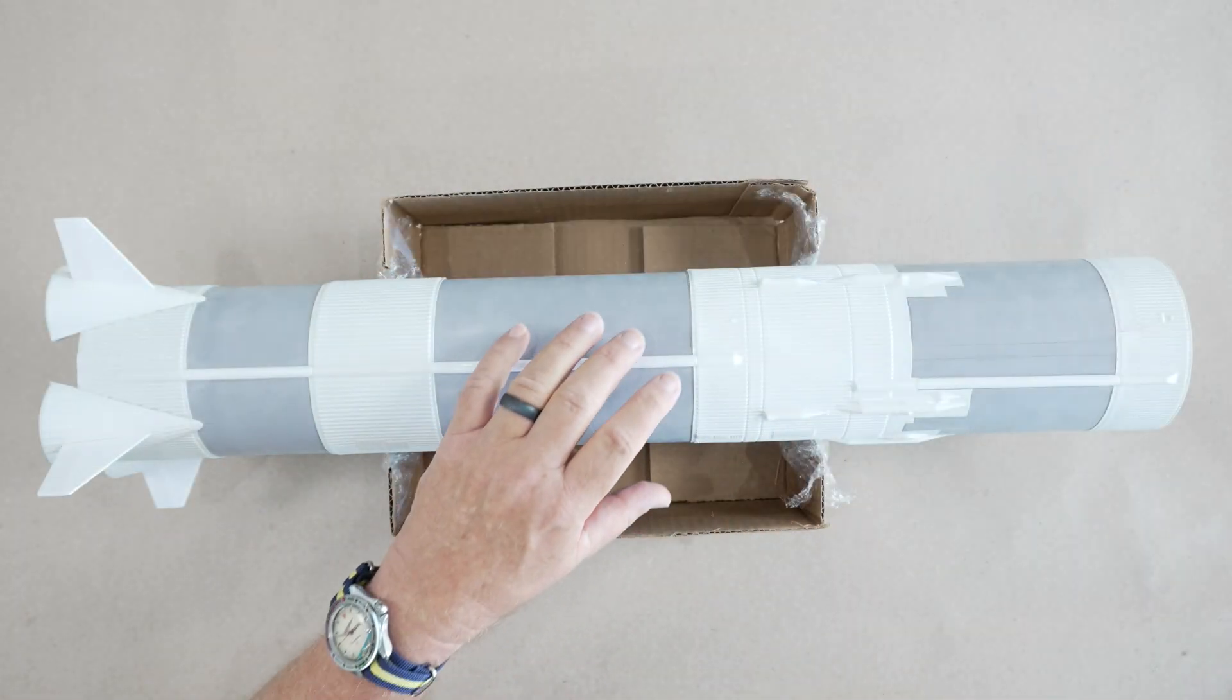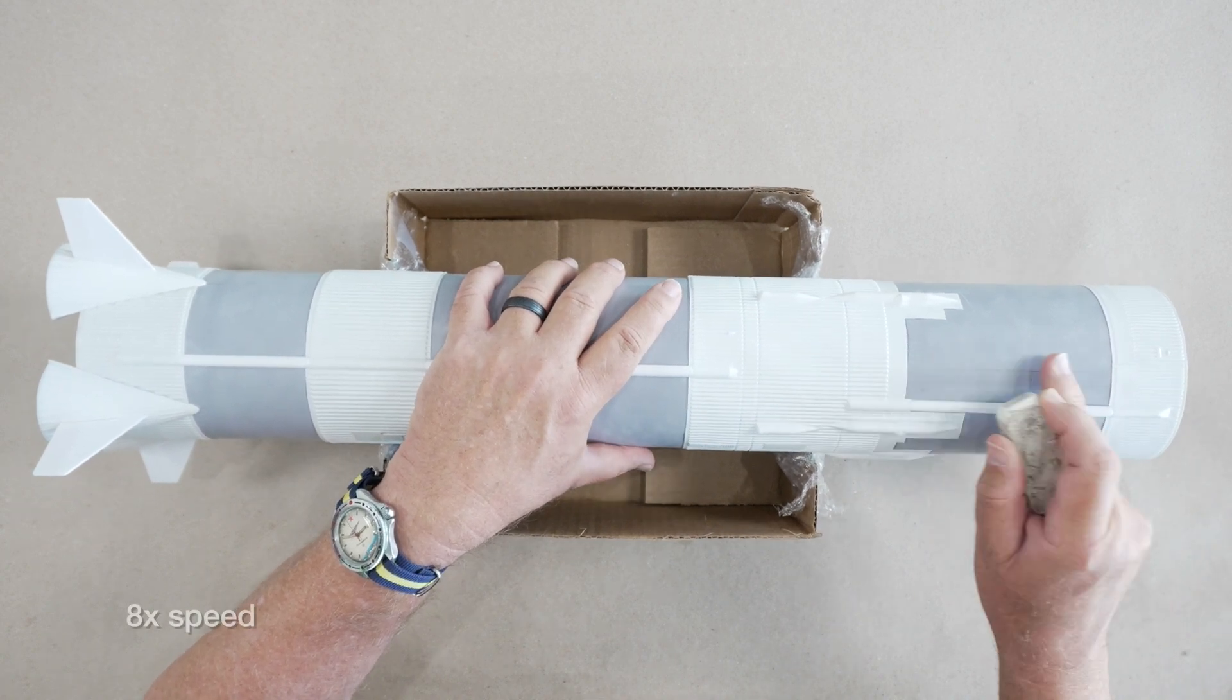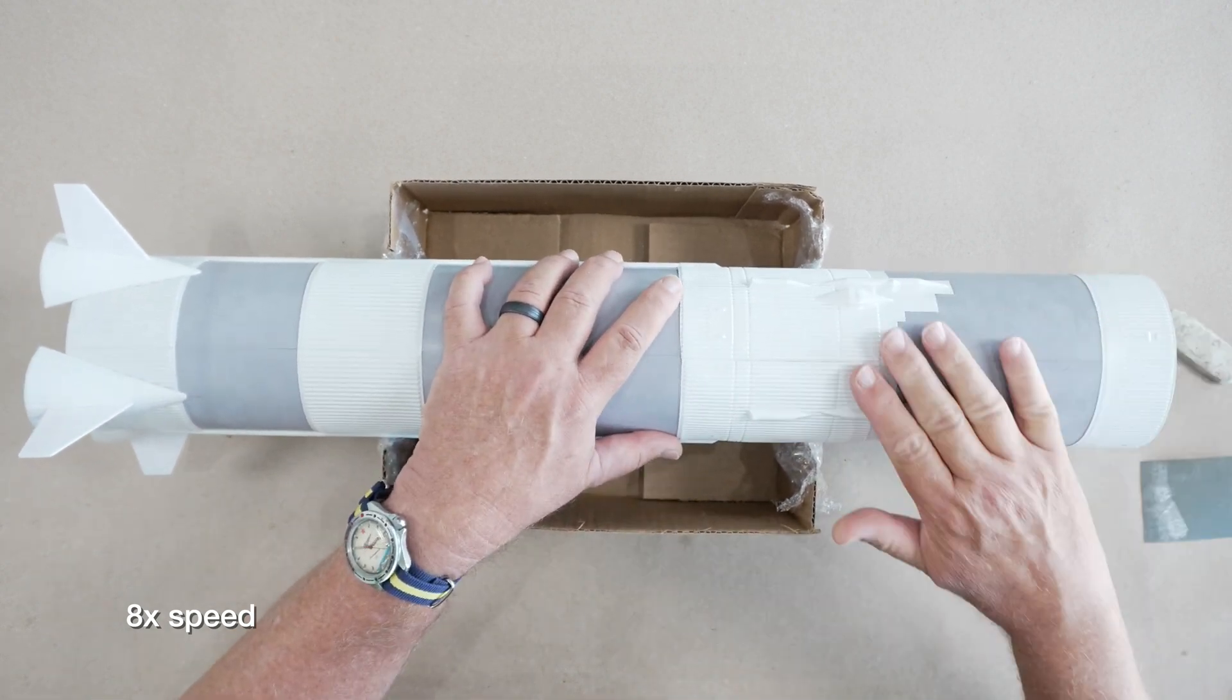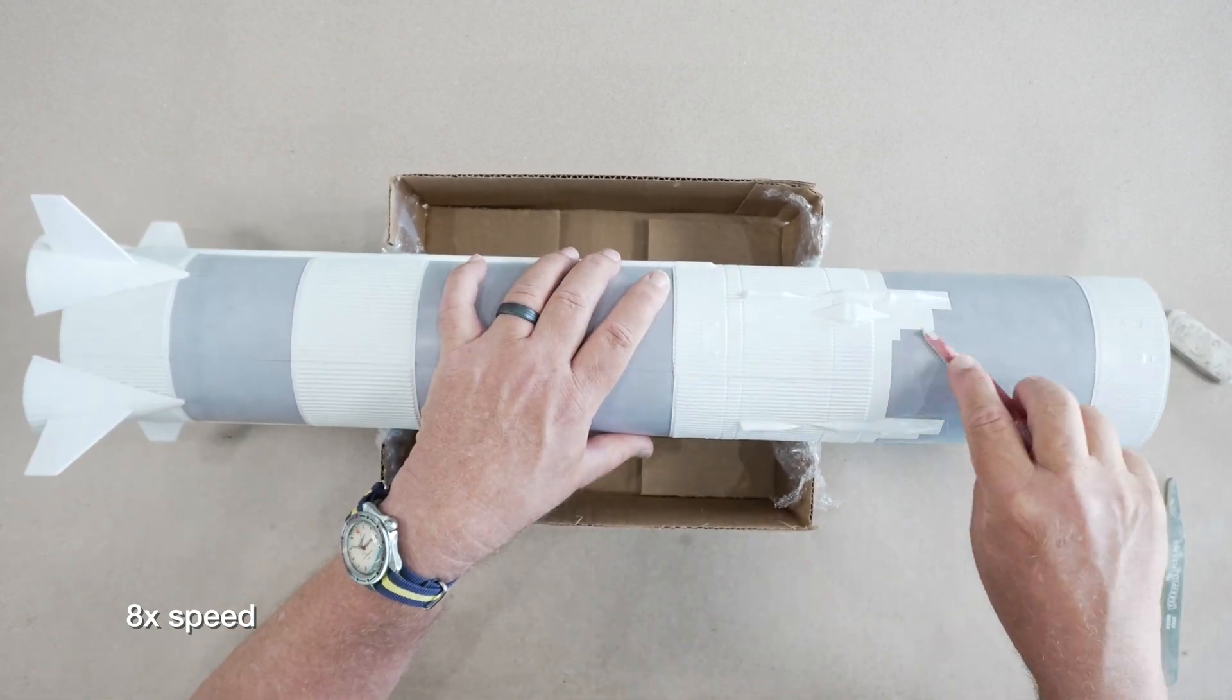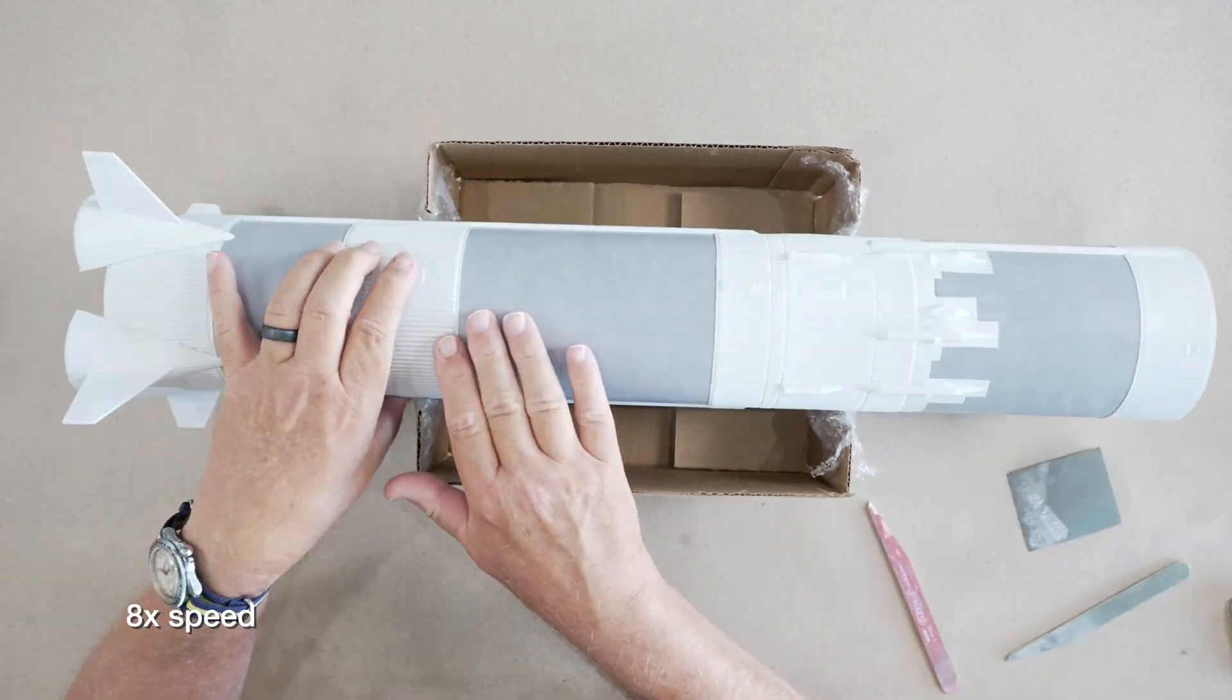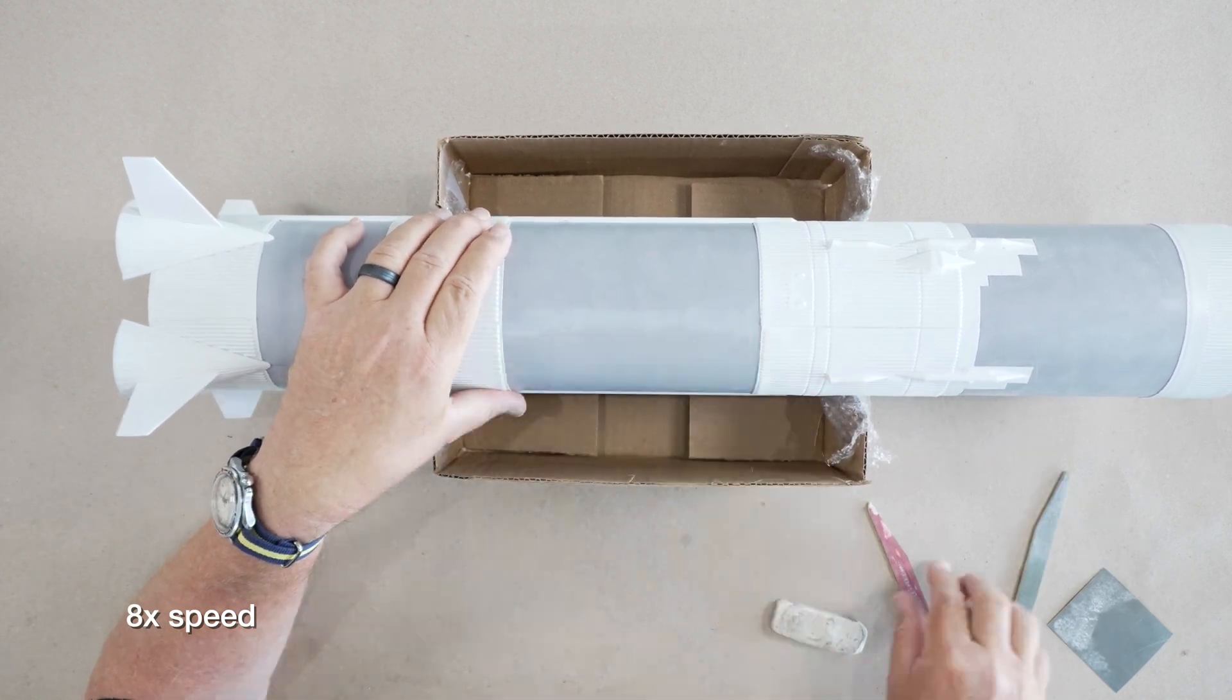We'll start the cleanup process on the lower airframe now starting with these pencil lines. As this footage speeds by, note that we're using a variety of tools to clean up the parts, such as an artist's eraser, fine and ultra-fine sanding sticks, and 1200 grit sanding paper.